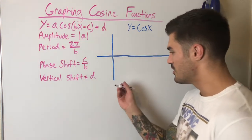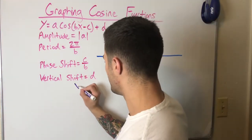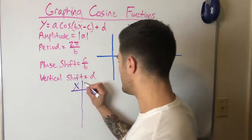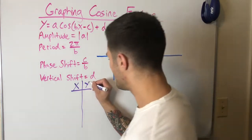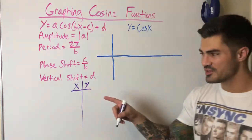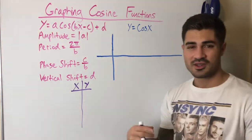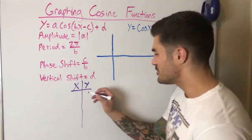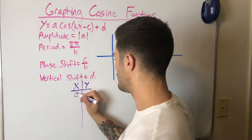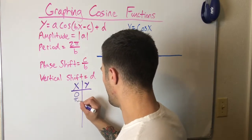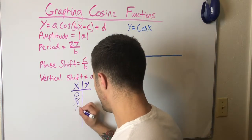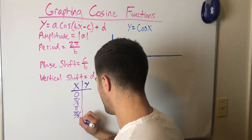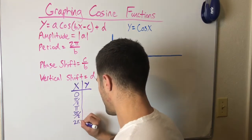We can graph the parent function by just plotting points — pick x-values, plug them in, and see what y is. I want values I know without a calculator, so I'll use: 0, π/2, π, 3π/2, and 2π.